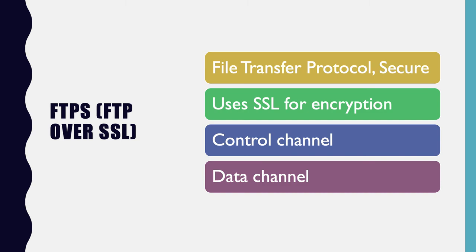We need to keep two ports open when implementing FTPS: one for the control channel, port 21, and the other for the data channel, which is a range of ports. In a way, this creates a more open port footprint.